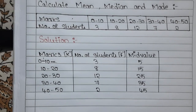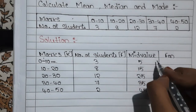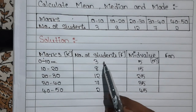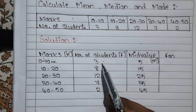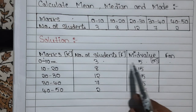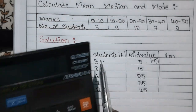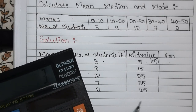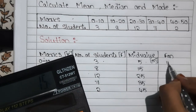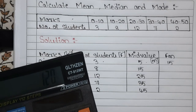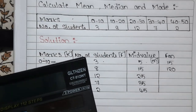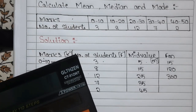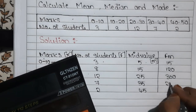Now we have to calculate fm. We assume the mid value as m. To get fm, multiply f with m — not add. You can use a calculator to avoid mistakes. So: 3 × 5 = 15, 8 × 15 = 120, 12 × 25 = 300.